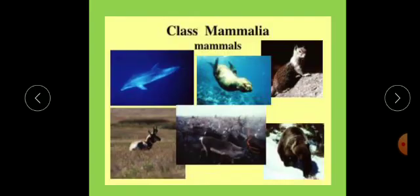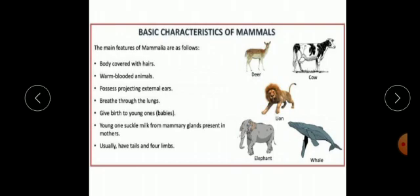Class Mammalia consists of mammals. Let us discuss the basic characteristics of mammals. The main features of Mammalia are as follows: the body is covered with hair or fur.